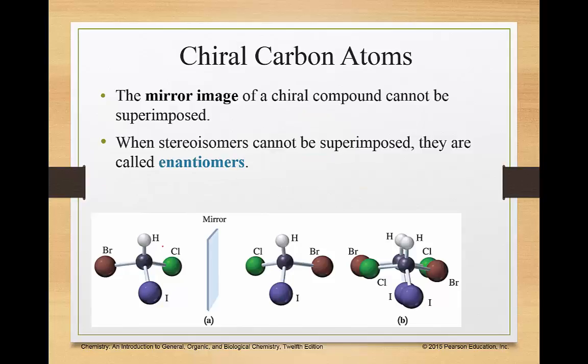And that would create a non-superimposable image. So for instance, here's the carbon. We have hydrogen, chlorine, iodine, and bromine. Here's the mirror that we had in that video. So here's the mirror image of it. If we try to overlap these, the bromine and the chlorine would not overlap. And that's what's making it chiral. These are called enantiomers.